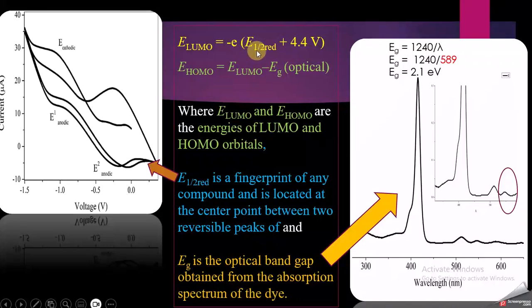Once I have this half-wave reduction potential, I will put the values here and can find out the LUMO energy level of my molecule. The second step will be to find the band gap.